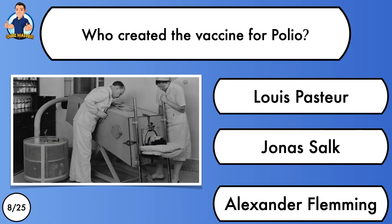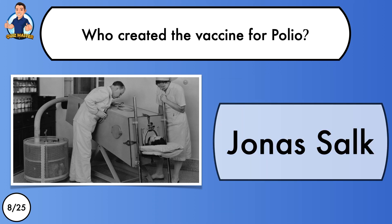Who created the vaccine for polio? Louis Pasteur, Jonas Salk or Alexander Fleming? It was Jonas Salk.